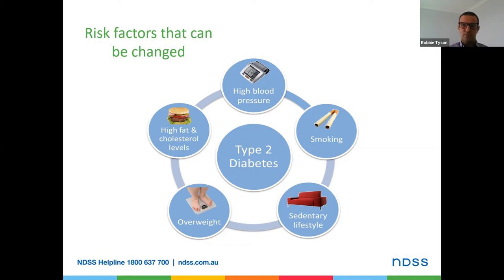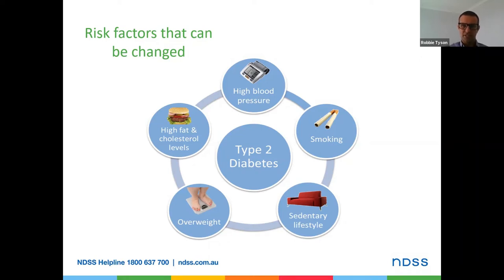A sedentary lifestyle — inactivity, not much physical activity or movement — whether because of injury, illness, limited capacity, lifestyle choices, or a sedentary job, can be managed and changed by increasing movement and decreasing sitting time. Being overweight increases the risk of diabetes because excess fat around the organs tends to interfere with how well insulin works. High fat and high cholesterol levels are similar — that extra fat in the blood requires insulin to get into the cells, and too much fat in the blood interrupts and affects how well that insulin works.